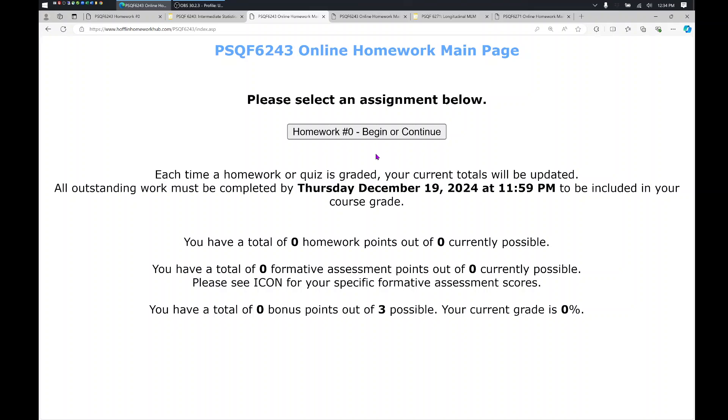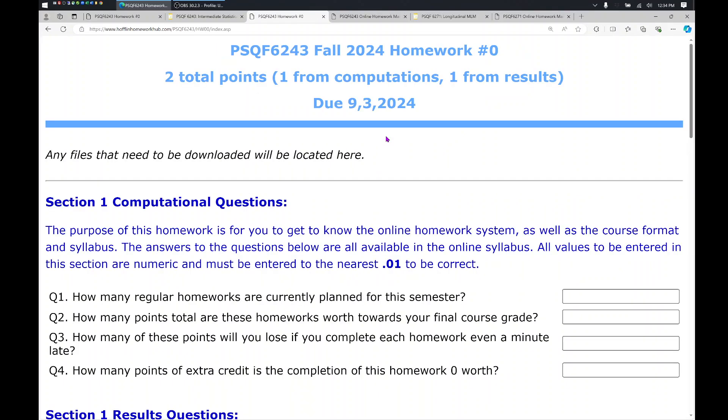Homework zero is what we are here to demonstrate today. It is for two points of extra credit, and it is about the syllabus, so it should not be too challenging. So my homeworks have two different kinds of questions. Any data files that you need to be able to answer the questions will be linked from this spot right here. At the top of the homework, it tells you how many total points you have, and then how many points are from the two different kinds of questions, as well as the due date.